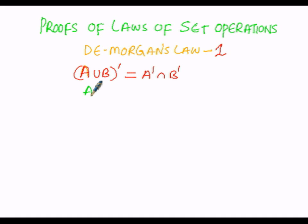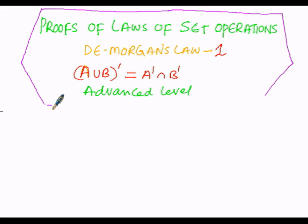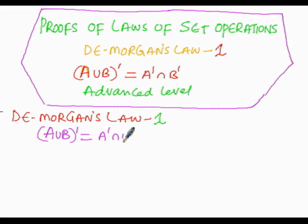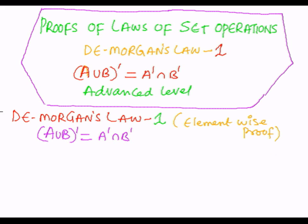Here in order to prove this condition, we assume two sets A and B. De Morgan's Law number one states that (A∪B)' = A' ∩ B', or equivalently, (A∪B) dash equals A dash intersection B dash. We are going to prove this condition by element-wise proof.